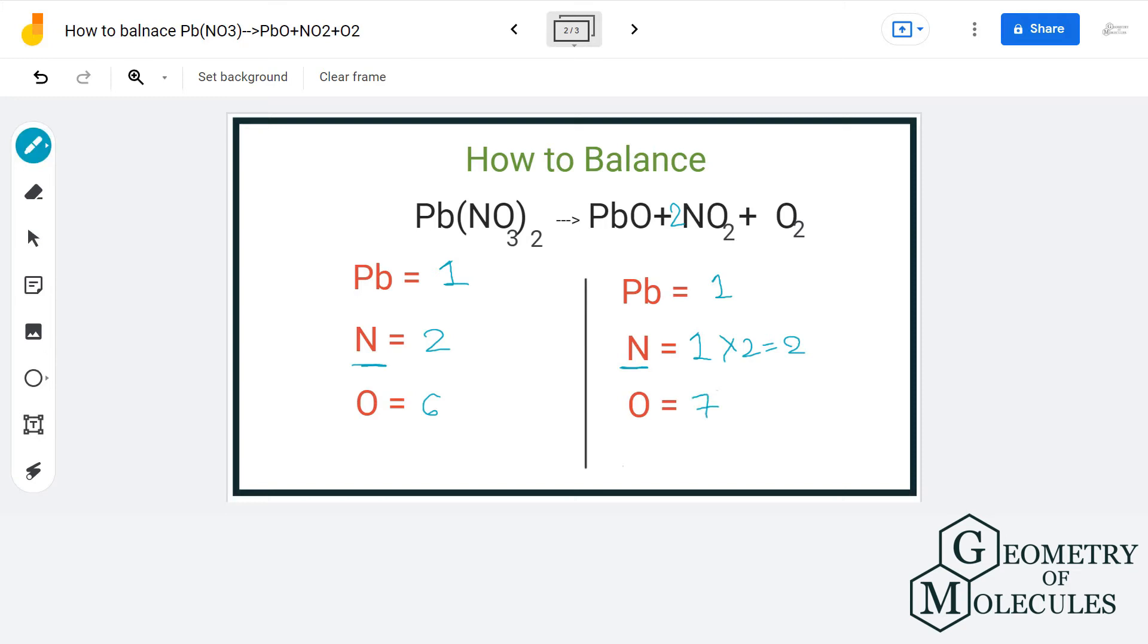We only have six on the reactant side. So, let us balance oxygen by adding two in front of lead nitrate. This will give us two lead, four nitrogen, and twelve oxygen atoms on the reactant side.